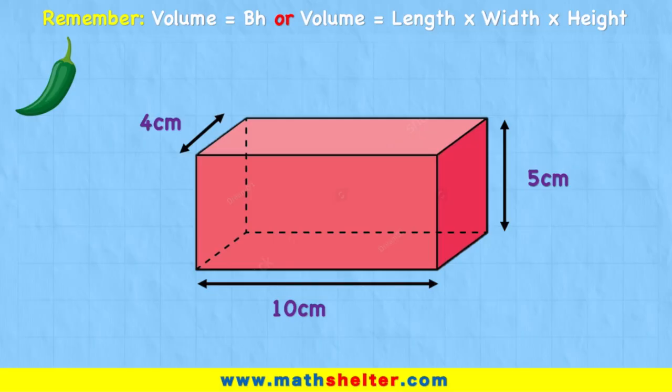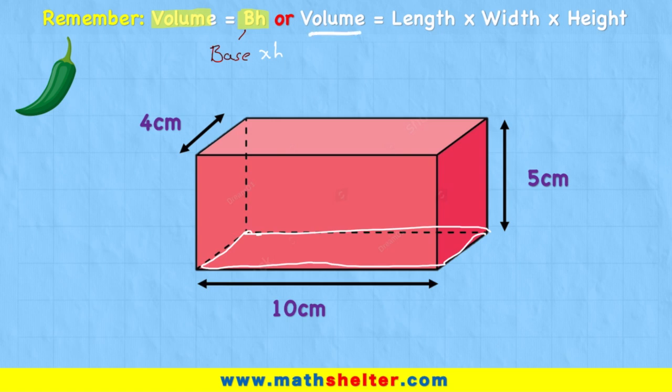Okay, what are we going to remember today? Well, we're going to remember this formula that volume equals capital B and H. And this capital B represents the base. And the base of this rectangular prism would be this surface area just here. And then we would times that by the height. Or in other words, the volume equals length times width times height.